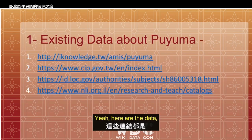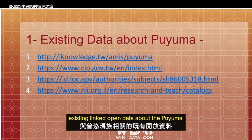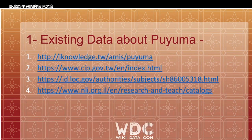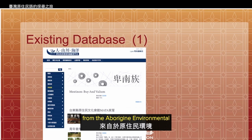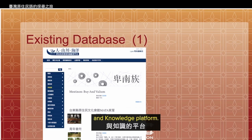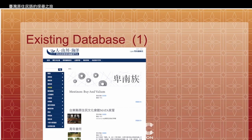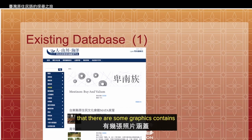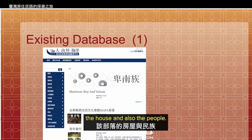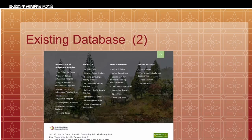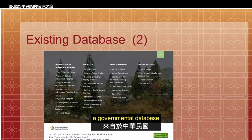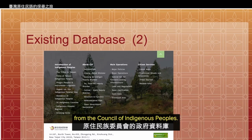Here is the existing linked open data about the Puyuma. First, this is a database from the Austronesian environmental and knowledge platform. You can see that there are some graphic contents on the house and also the peoples. Of course, all these are not with data entries. Second, this is another database — a governmental database from the Council of Indigenous Peoples.